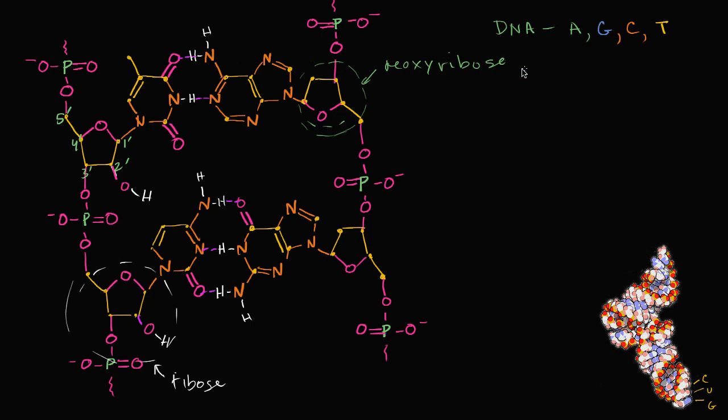In RNA, you still have adenine, you still have guanine, you still have cytosine, but instead of thymine, you have a very close relative of thymine, and that is uracil. When we started this video it was double-stranded DNA. This nitrogenous base is thymine, and it forms hydrogen bonds with adenine.